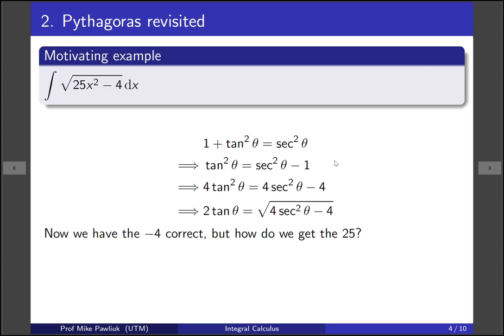So in the right-hand side, we have the square root of something squared minus 4. So we have the minus 4 correct. But how do we get the 25 to show up correctly? Right now it's a 4.